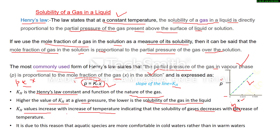The solubility of gas in a liquid is an exothermic process, and according to Le Chatelier's principle, if we increase the temperature, solubility of the gas will decrease. That is why aquatic species are more comfortable in cold water rather than in warm water, because in cold water the amount of dissolved oxygen is more compared to warm water.